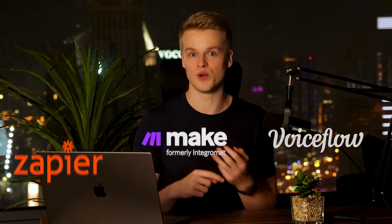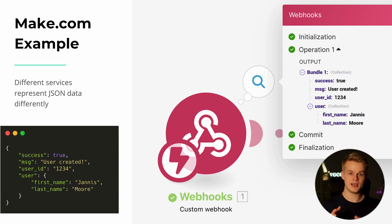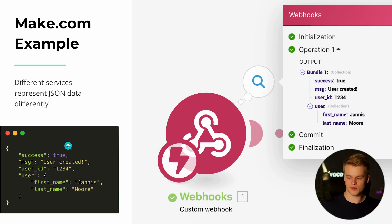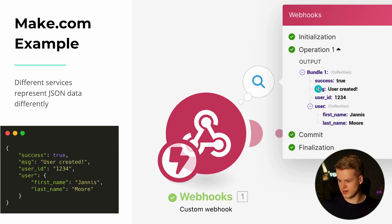Now, how does JSON actually look in action when used with automation services like Zapier, make.com, or VoiceFlow? Here I prepared an example using make.com. When I sent this specific JSON to a webhook endpoint within make.com, the output looks very similar — success equals true, message, user ID, user first name, last name — the exact same setup. make.com structures the data in a more visual way so you don't need to understand the raw JSON structure, making it easier to read and process in your next tasks.